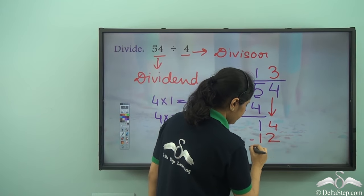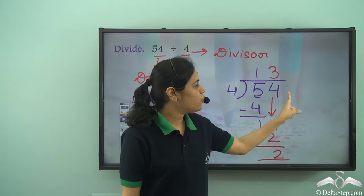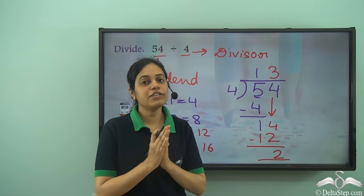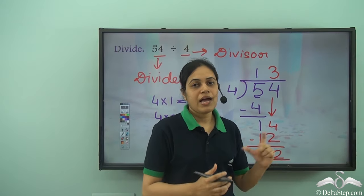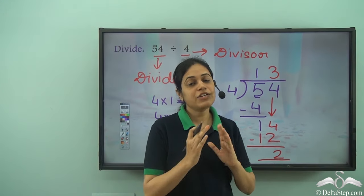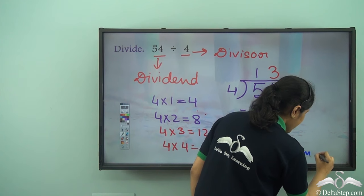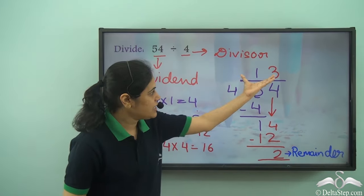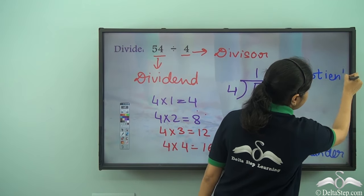3 into 4 is 12. I subtract it to get 2. Now, 2 is less than 4 but I don't have any other digit which I can bring down. So we stop the division here. This 2 is called the remainder. This number 13 is called the quotient. So this is the quotient of my division.